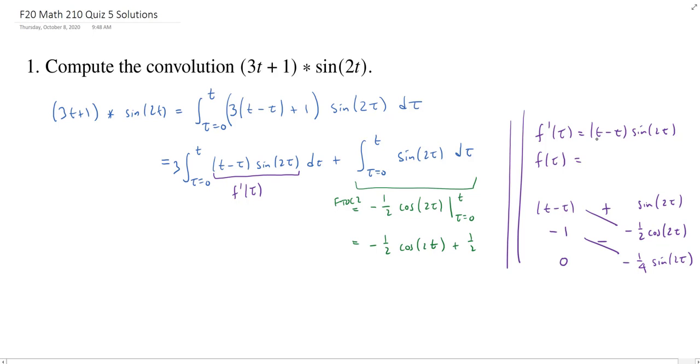Negative 1 half t minus tau times cosine of 2 tau. And then minus, minus will be minus 1 fourth sine of 2 tau. So this integral here, well, we have a 3 to worry about. Let's not forget that. So what is it 3 times? Well, it's going to be 3 times f of t minus f of 0.